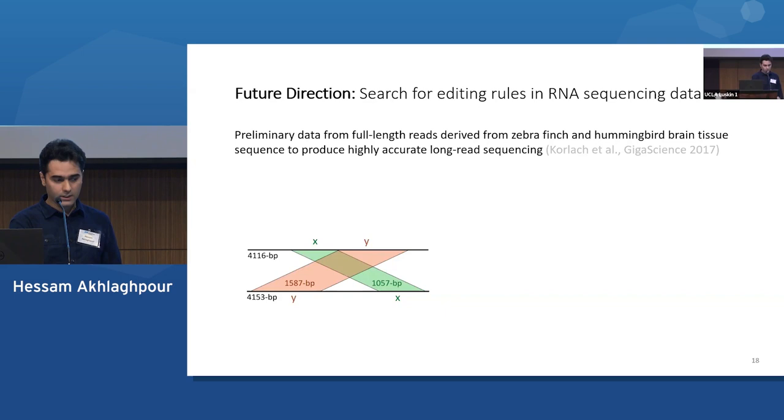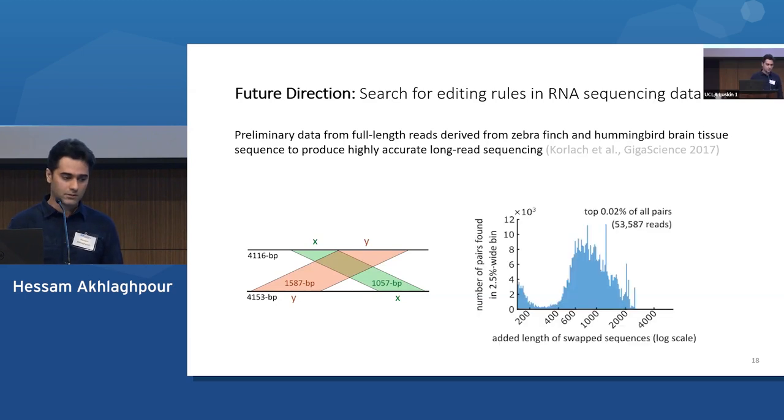So currently, I'm looking at swapping events. So this is just one example of a hit that I found where you can find two transcripts that share the same sequences but in different order. And currently, we don't have a canonical rule that can explain how different parts of the same strand can be reordered. And so I'm hoping that with this, we might be able to find those basic elementary operations that might come together and build a universal computation system.